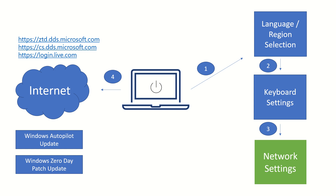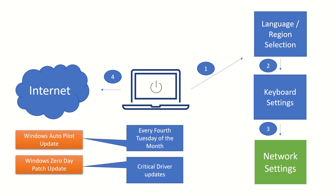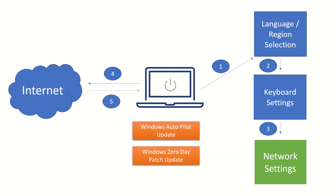There is a service in Windows 10 responsible for transitioning the device from factory state to business ready state, and there will be regular updates for it. Windows Autopilot updates are replicated every fourth Tuesday of the month, whereas Windows Zero Day updates can be released anytime because these are critical driver updates that must exist on a specific machine.